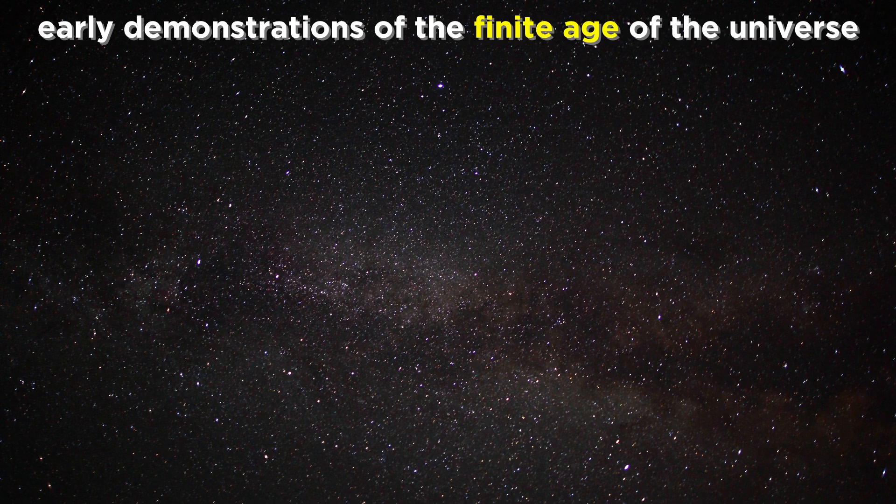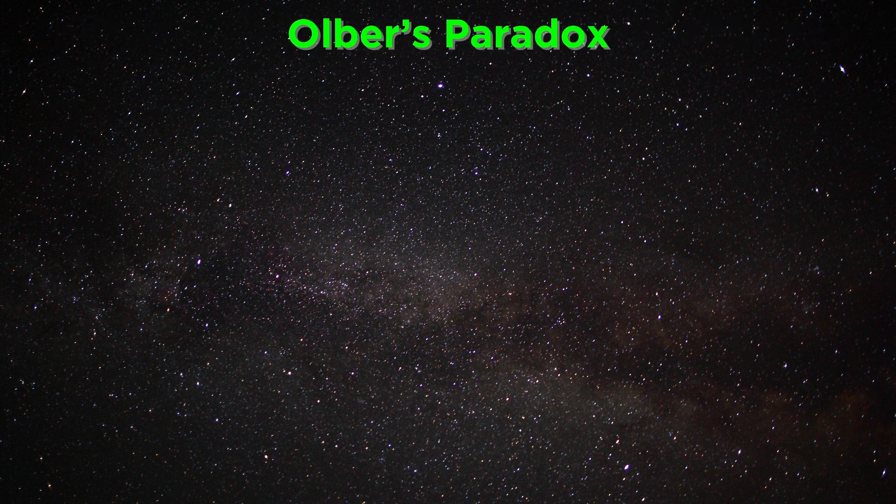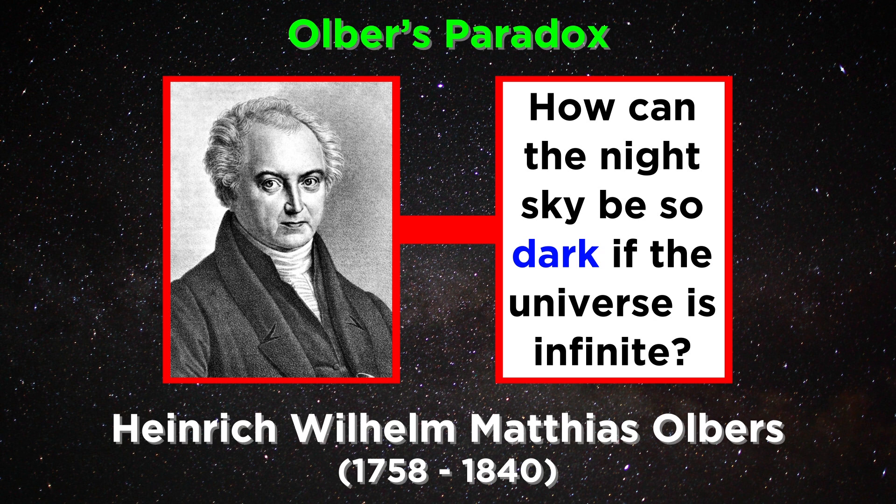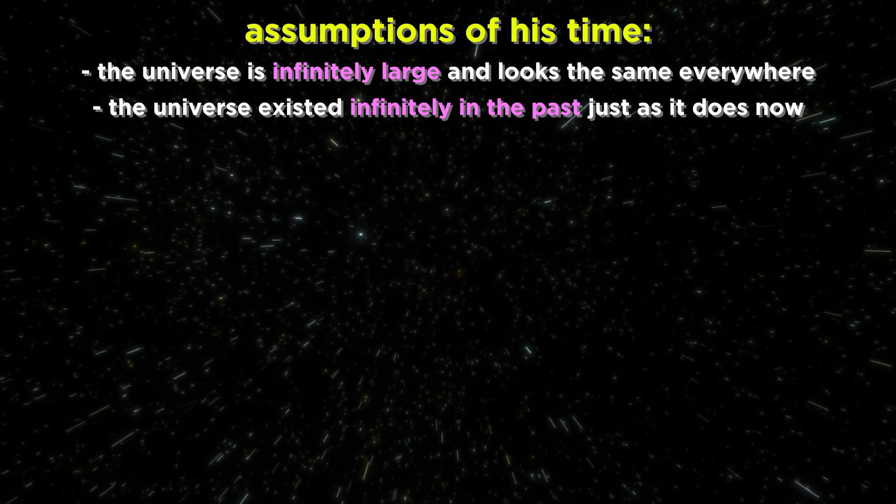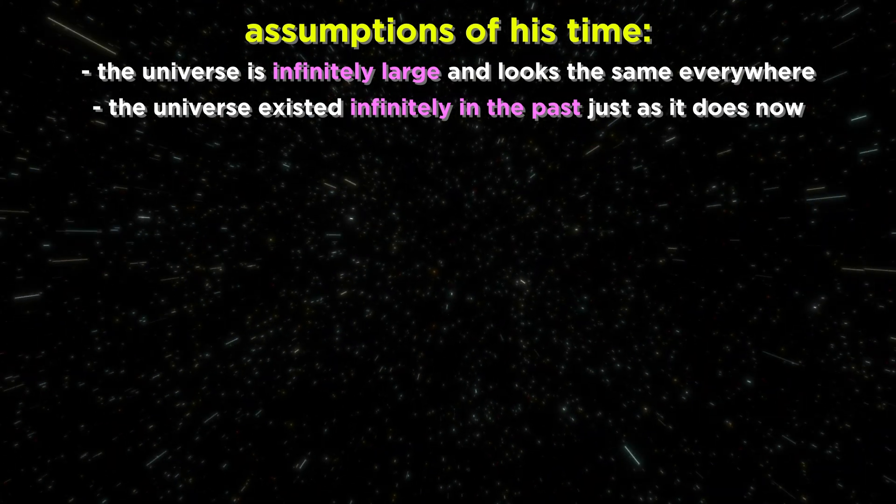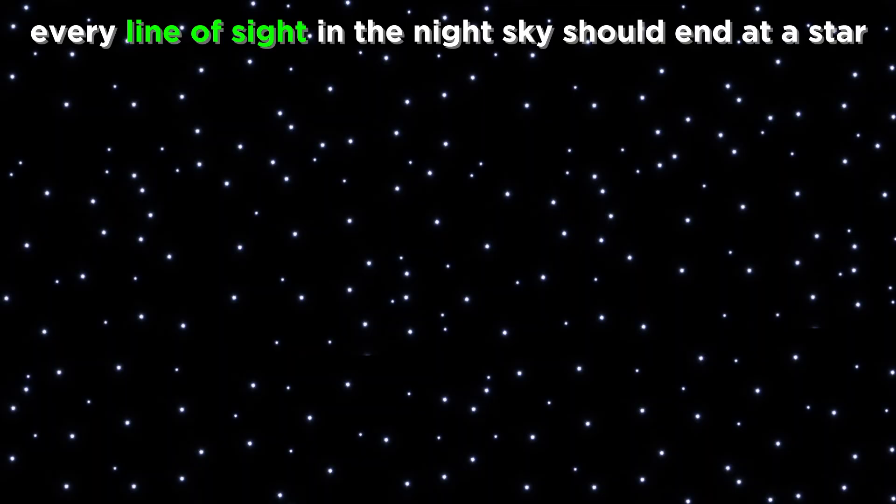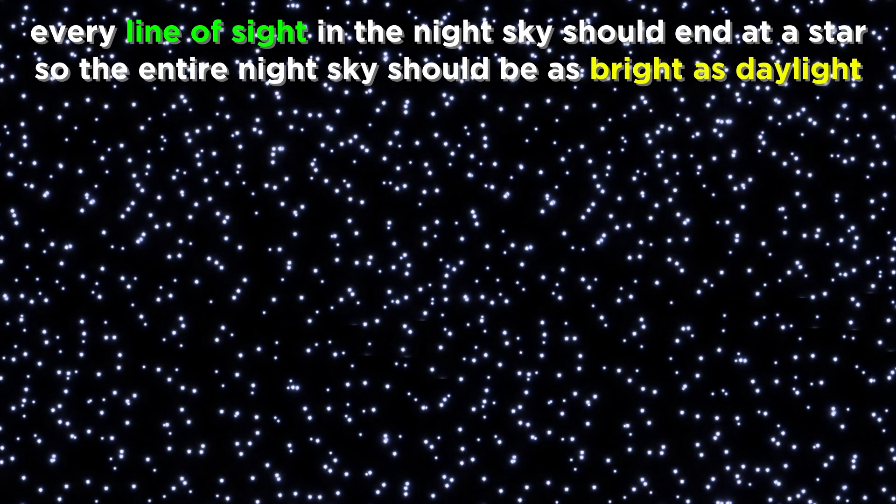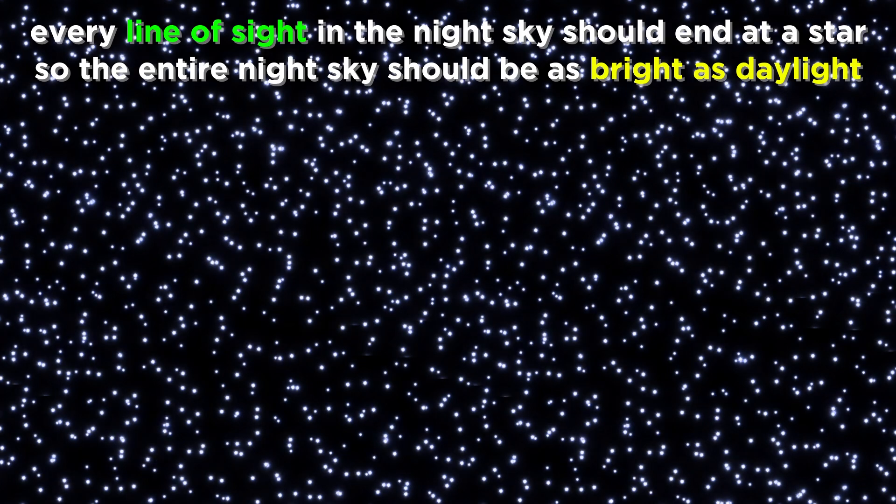Let's start with the first primitive demonstrations of a universe with a finite age. This began with something called Olber's paradox. This is named after a German astronomer who in 1823 wondered how the night sky could be dark if the universe is infinite. He reasoned that if the universe were infinite in both space and time, full of stars in all directions forever and with no beginning in time, then every line of sight that is possible should eventually arrive at a star. If every line of sight were to reach a star, then the whole sky should be as bright as a star, and the night sky should be as light as daytime.